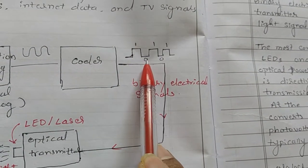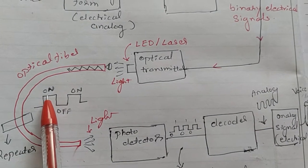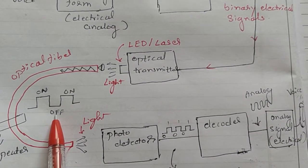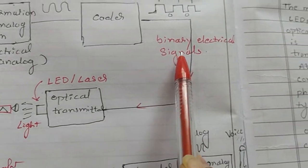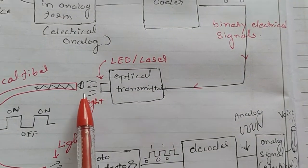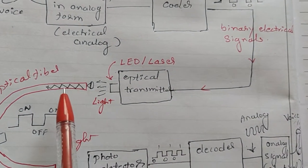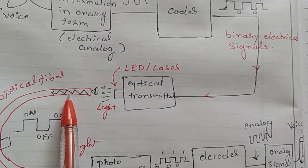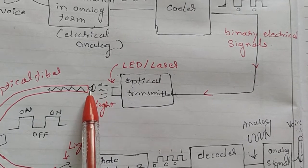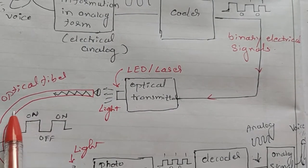For a binary one, the LED will be on; for a binary zero, the LED will be off. All the binary electrical signal is thus converted into pulses of optical power. These pulses of optical power are directly fed into the optical fiber within the acceptance cone.